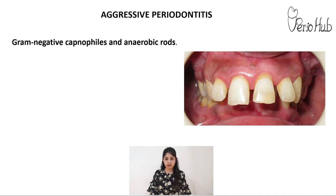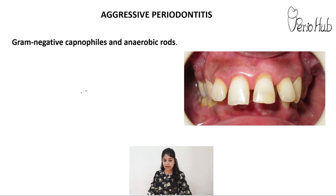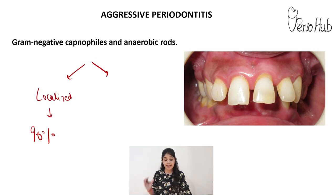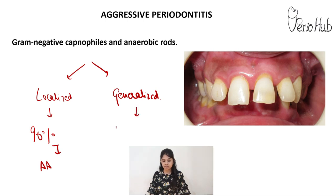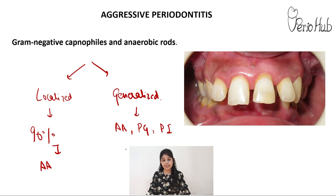In aggressive periodontitis, similar to chronic periodontitis, we see increased proportions of gram-negative anaerobic capnophiles. Aggressive periodontitis can be of two types. In the localized form, 90% of the cultivable microflora is Aggregatibacter actinomycetemcomitans (AA). In generalized aggressive periodontitis, the dominant species are mainly AA, Porphyromonas gingivalis, Prevotella intermedia, and again certain viruses such as human cytomegalovirus can also be isolated.